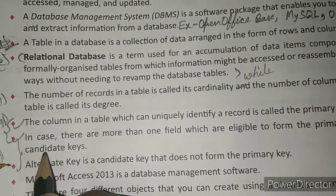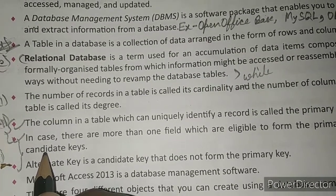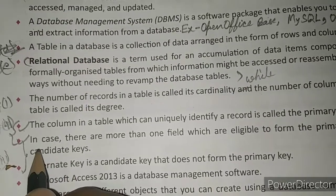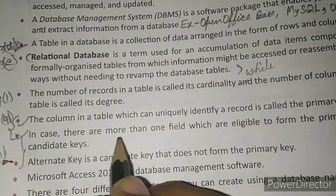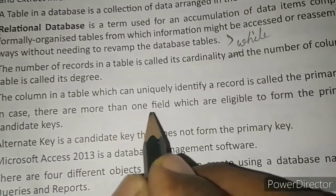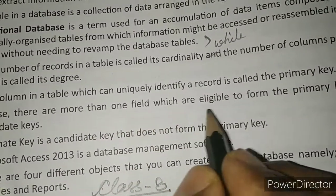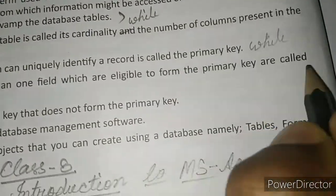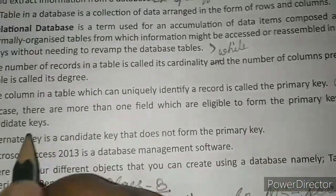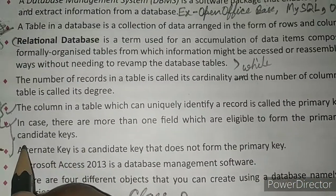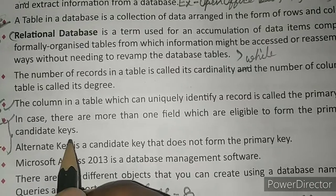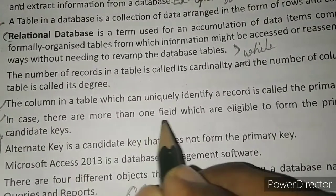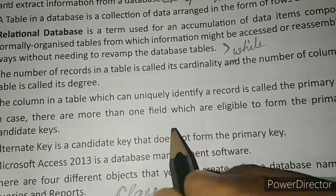Under that heading write: in case there are more than one field which are eligible to form the primary key, those fields are called candidate keys.